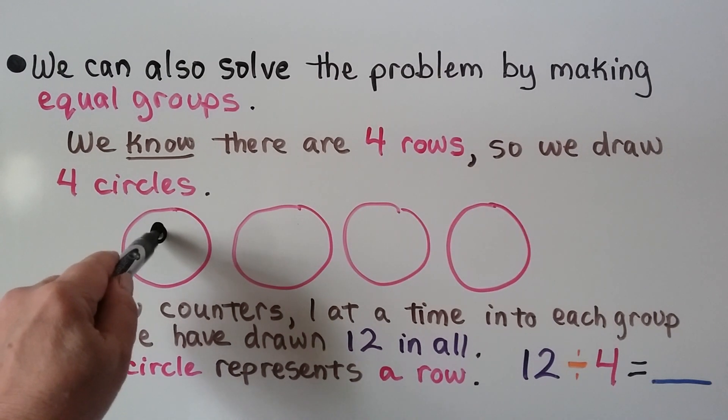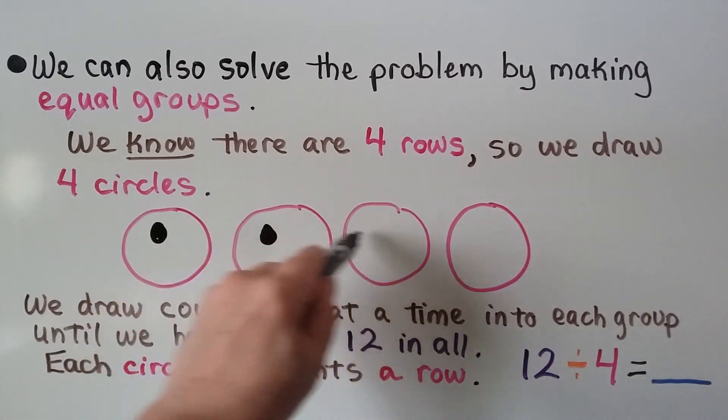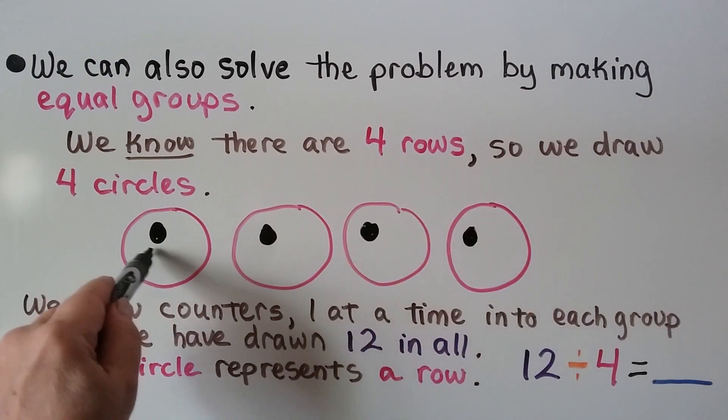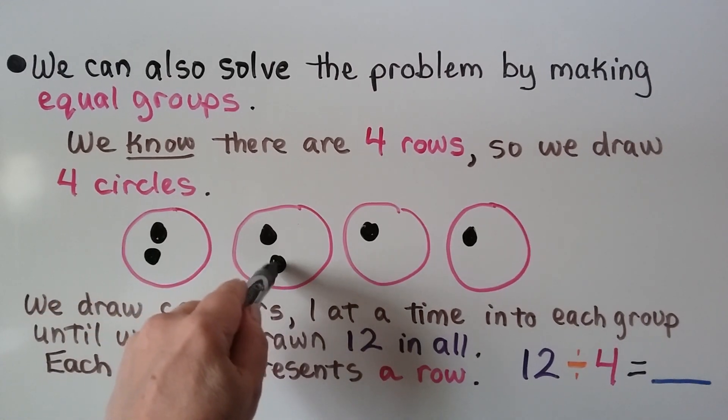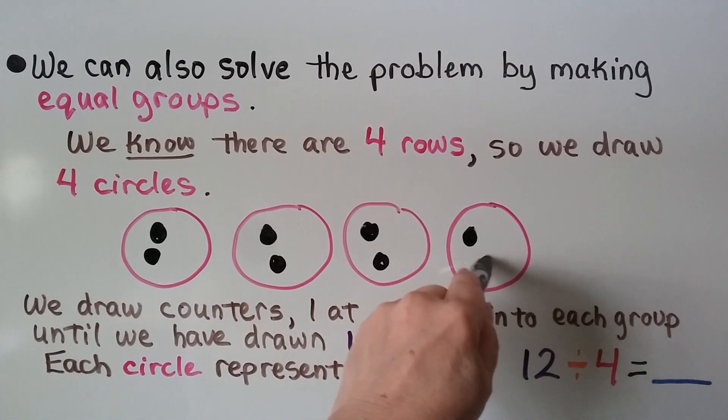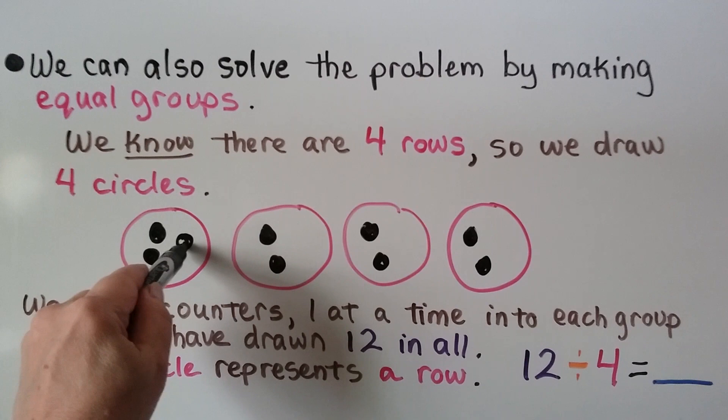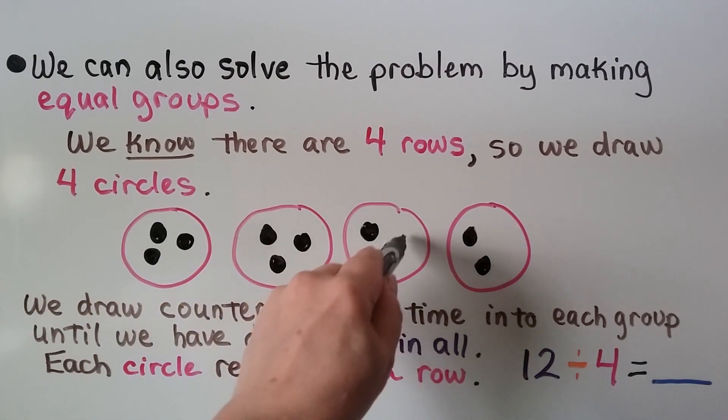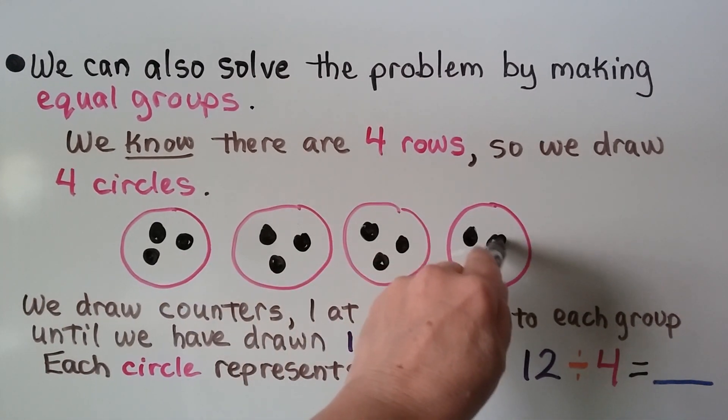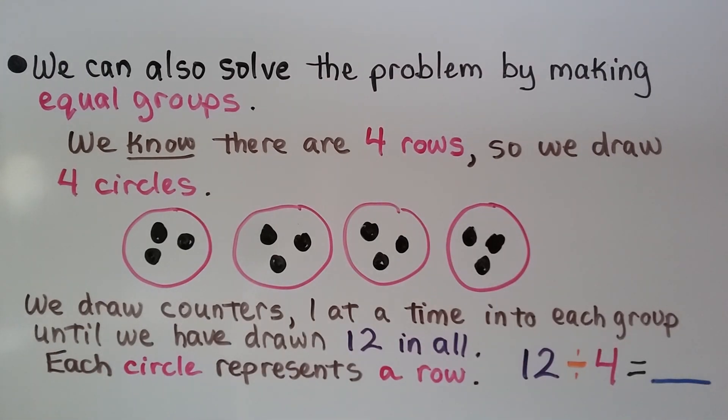We need to make 12 in all. We take turns putting one in each group: 1, 2, 3, 4, 5, 6, 7, 8, 9, 10, 11, and 12.